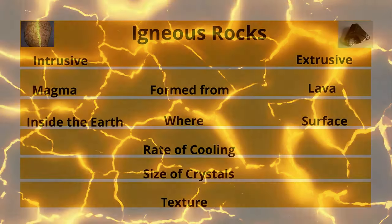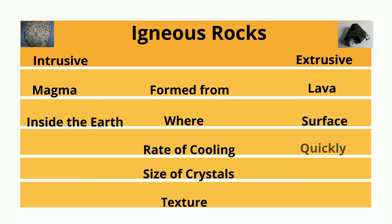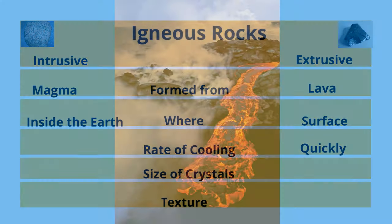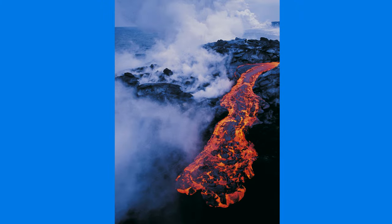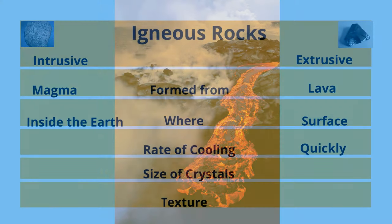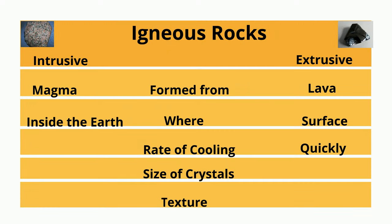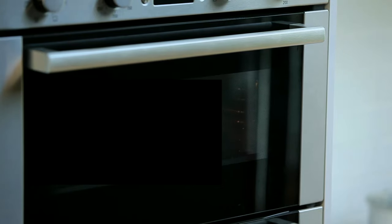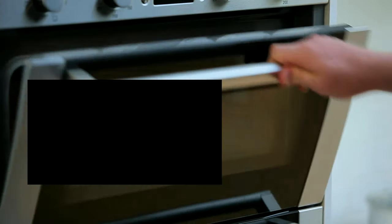Extrusive rocks cool quickly because they are on the surface of the earth or may even encounter water. Intrusive rocks cool slowly — they're inside the earth, which acts a little bit like an oven, which slows the rate of cooling.